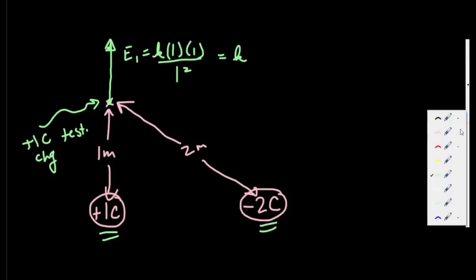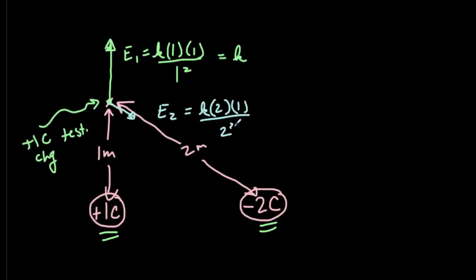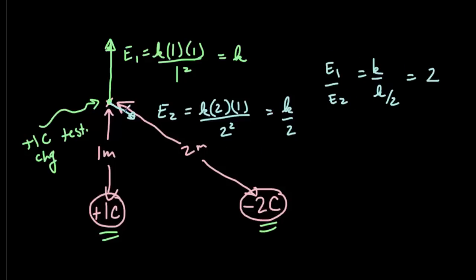Applying the same reasoning to the 2 coulomb charge: it's negative, so it attracts the positive test charge. E2 should be a shorter vector than E1 because even though it has twice as much charge, it's twice as far away, and distance is more important than charge since it goes as 1 over distance squared. E2 equals K times 2 coulombs times 1 coulomb divided by 2 meters squared, giving K over 2. The ratio E1 to E2 is simply 2 — E1 should be twice as long as E2.